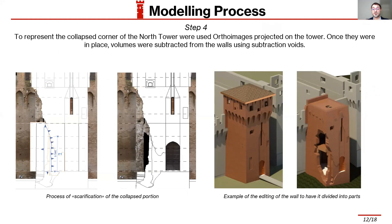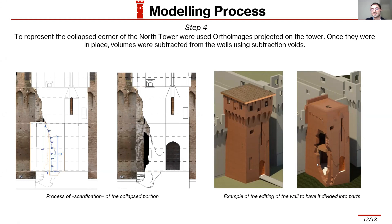After focusing on the original shape of the tower, we moved to the post-seismic situation. Since we didn't have any plans for that at the beginning of our work, we imported into Revit the ortho images created for the restoration. We used these ortho images to create volumes that were subtracted from the walls created in earlier phases, allowing us to reproduce the collapsed portions and measure the amount of masonry lost in the earthquake. We also produced scarification maps of the wall.